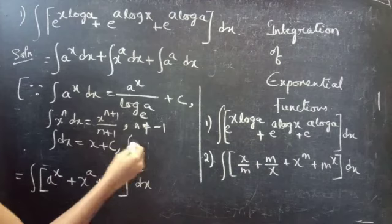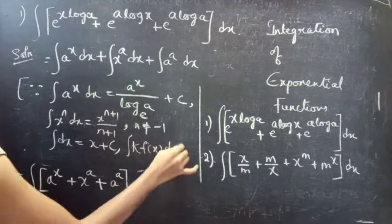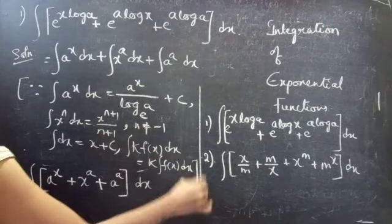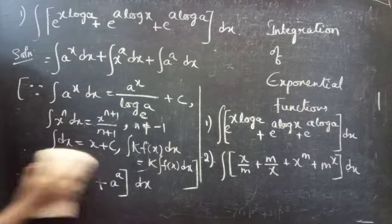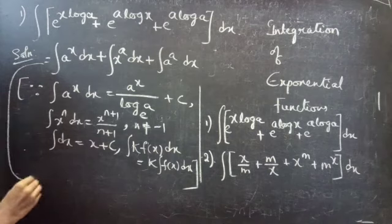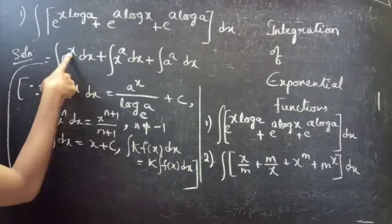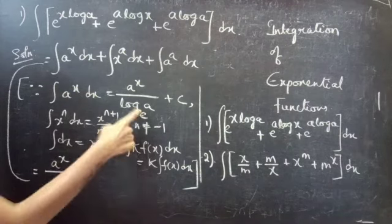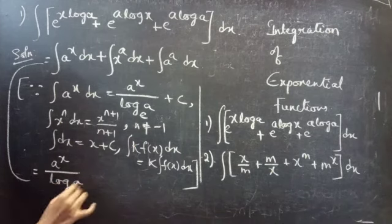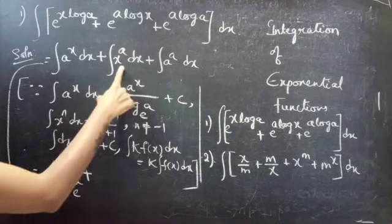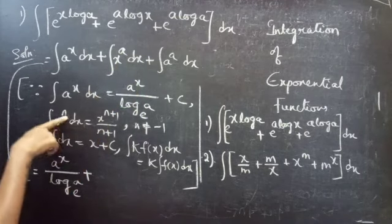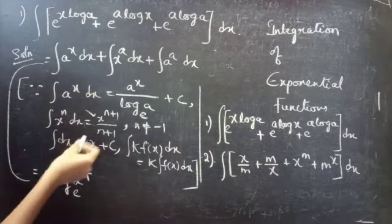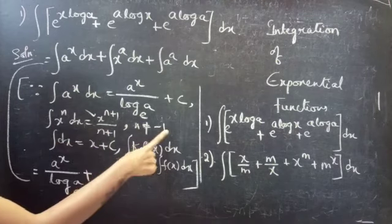Also, integral of a constant times f(x) dx equals the constant times integral of f(x) dx. Using the formula for integral a^x dx, you get a^x divided by log a to the base e. For x^a, this is of the form x^n, and for n not equal to minus 1, you can apply the formula.